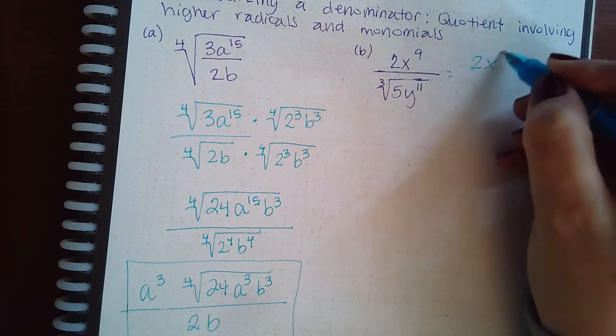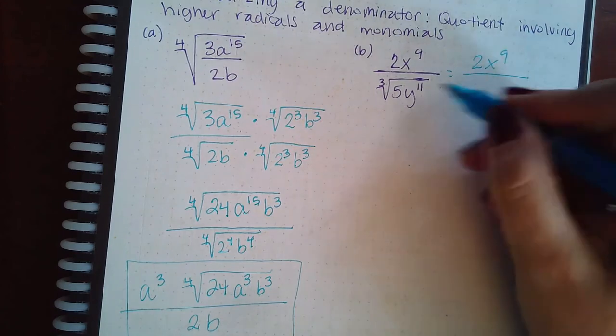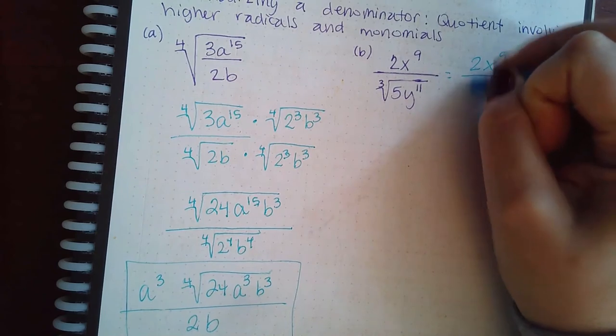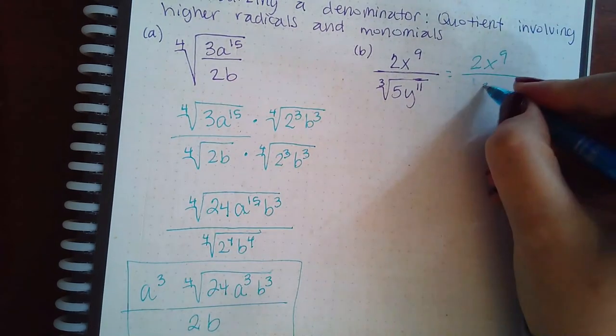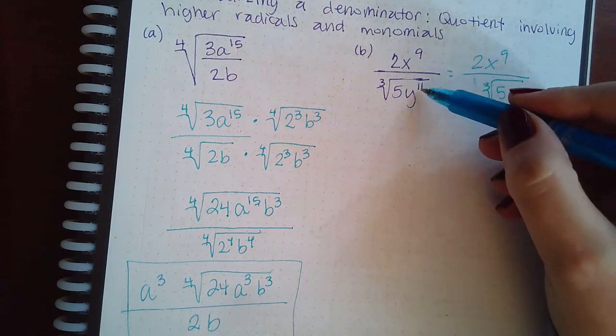So 2x to the 9th. It's not ready for me to figure out what's missing just yet. I can't take anything out from the 5 because it's just one prime number 5 and only one of them. I need 3 in order for it to come out.